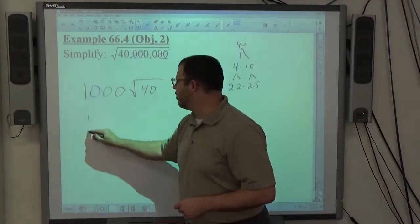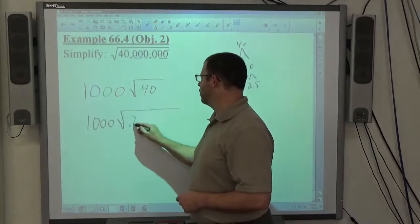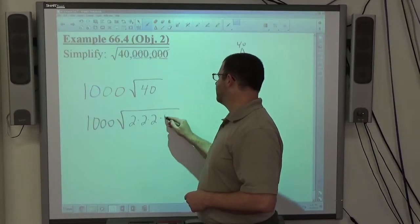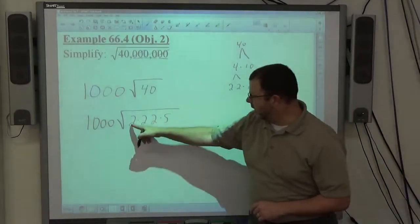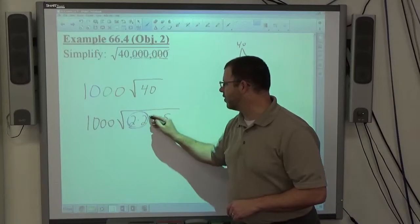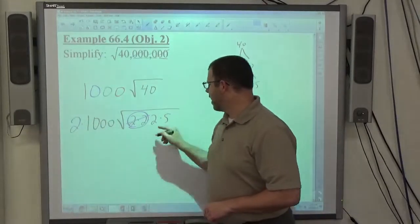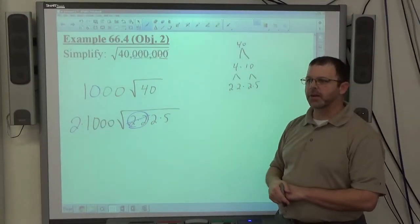So, that gets me to 1,000 times the square root of 2 times 2 times 2 times 5. And once I get the prime factor form of 40 there, a pair of 2's inside, I get to pull 2 outside. I got a 2 and a 5, both non-paired left inside.